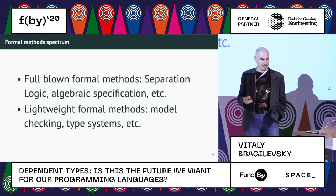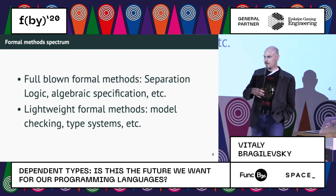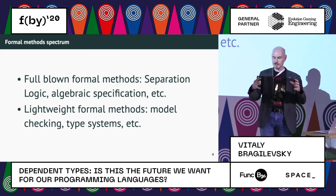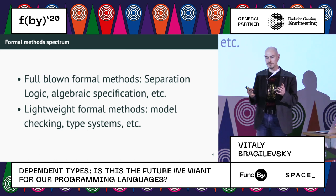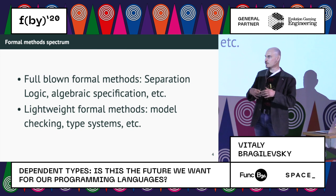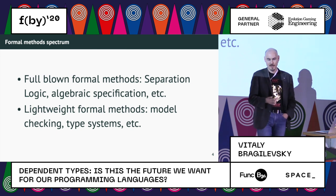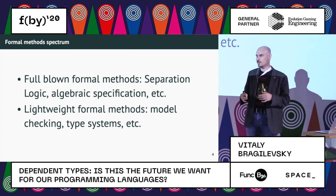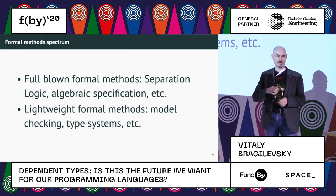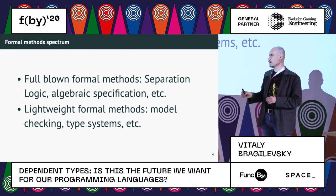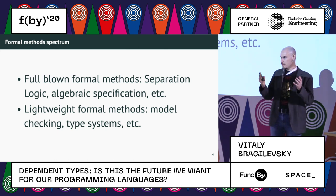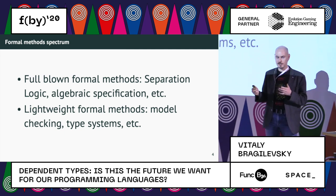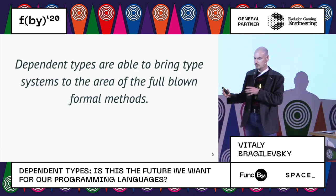There is a whole spectrum of methods for how we can achieve software correctness. There are formal methods, and they are lightweight sometimes. For example, type systems — if you use types, it's like a lightweight formal method. It is formal because you can prove things about your programs. But it's lightweight because the compiler can do almost everything for you. You can also use full-blown formal methods, like writing an algebraic specification — a whole language where you explain every detail of your program and then you can check that.